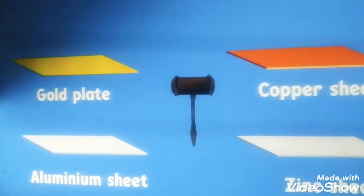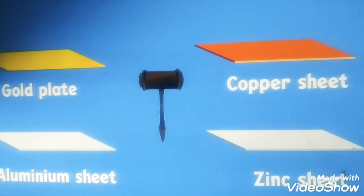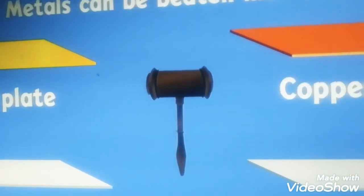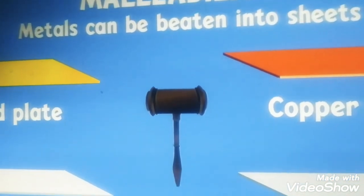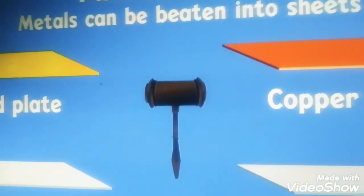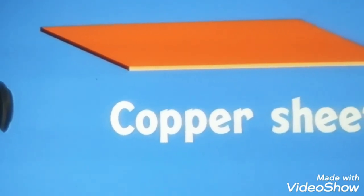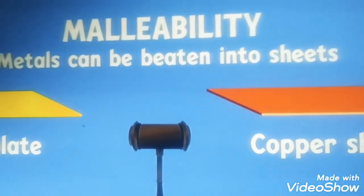Look here — there are four kinds of sheets: a gold plate, aluminium sheet, copper sheet, and zinc sheet. We can draw metals into sheets — that means metals can be beaten into sheets. This property is called malleability. The materials which can be flattened into thin sheets are called malleable materials. So metals have the property of malleability.